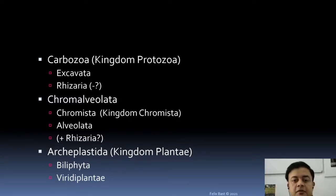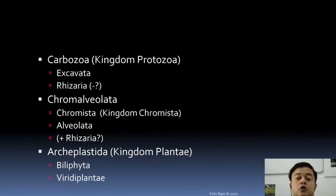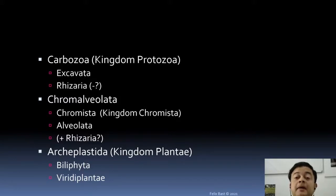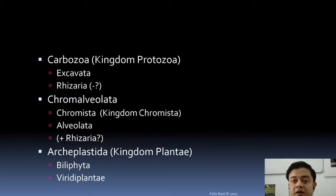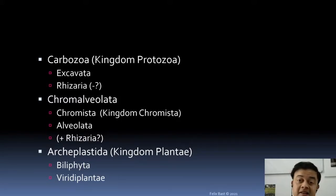The first kingdom is Protozoa, also known as Carbozoa. The second one is Chromalveolata, which includes the kingdom Chromista and other protists like Alveolata and Rhizaria. The third major kingdom is Plantae or Archiplastida — Archi means old, Plastida means plastid. So this is the group in which the plastids are the oldest, while in Chromalveolata and Carbozoa the plastids are derived through secondary endosymbiosis, whereas Archiplastida came through primary endosymbiosis.